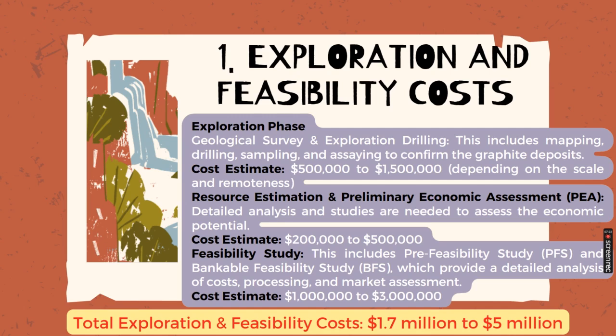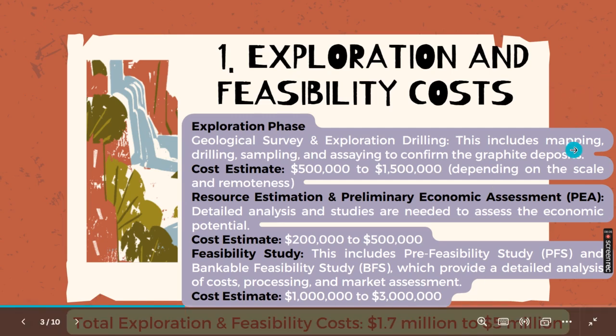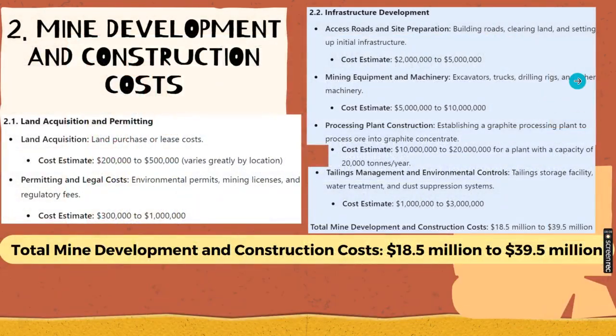For resource estimation and preliminary economic assessment, detailed analysis and studies are needed to assess the economic potential — the cost estimate is around 200,000 to 500,000 US dollars. The third item is the feasibility study, which includes two sub-stages: a pre-feasibility study and a bankable feasibility study. These studies provide detailed analysis of costs, processing, and market assessment. The cost for this is around 1,000,000 to 3,000,000 US dollars. Overall, exploration and feasibility costs total approximately 1.7 million to 5 million US dollars.